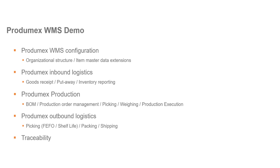In the demo that follows, I will take you through the configuration of the system including its organizational structure and item master data extensions. I will cover the Produmex inbound logistics process — goods receipt, put away, and inventory reporting. Then the production capabilities including bill of material management, production order management, picking, weighing, and production execution. Finally, the outbound logistics process for picking, packing, and shipping, and how all this is registered in the Produmex WMS traceability record.